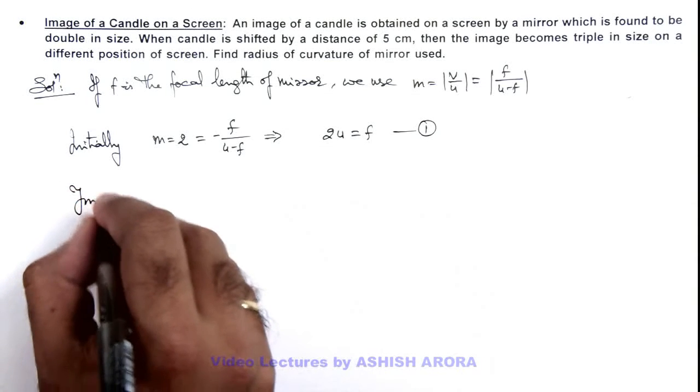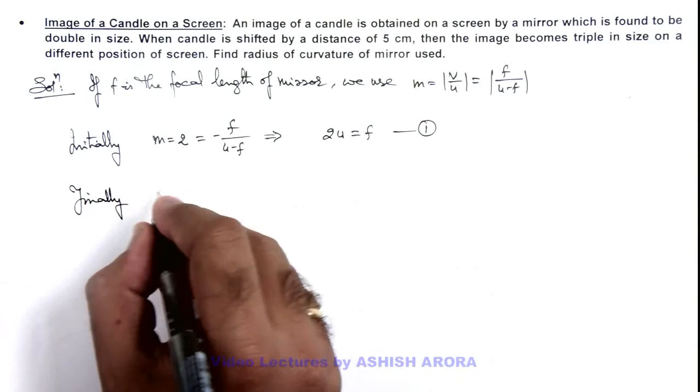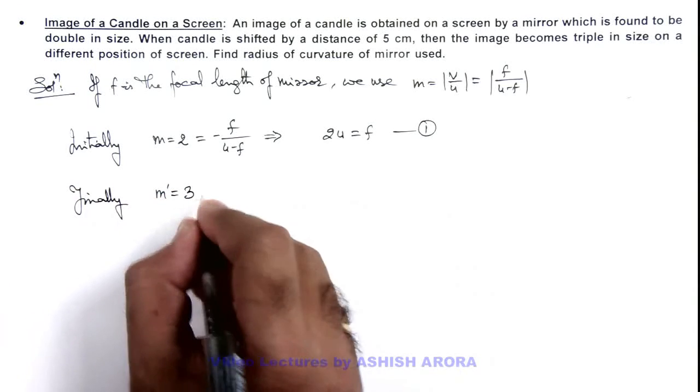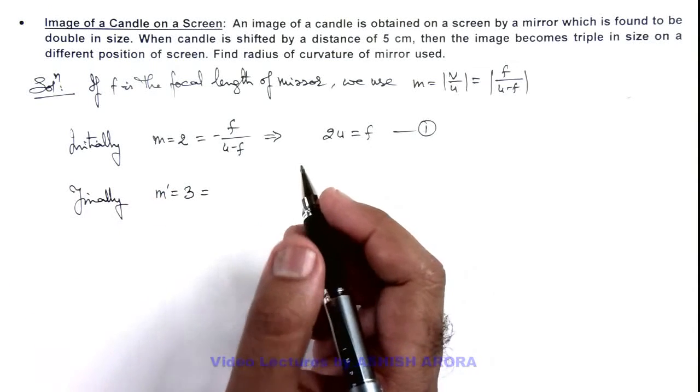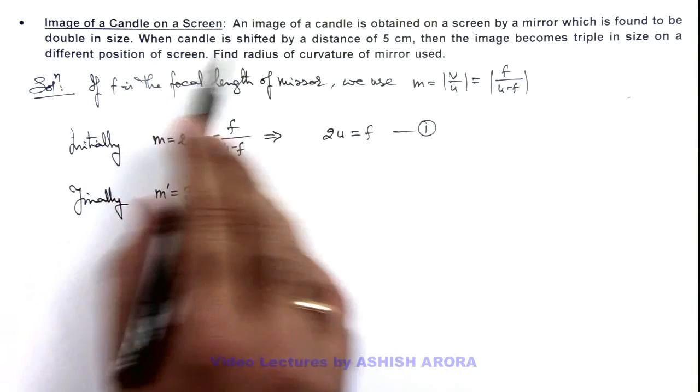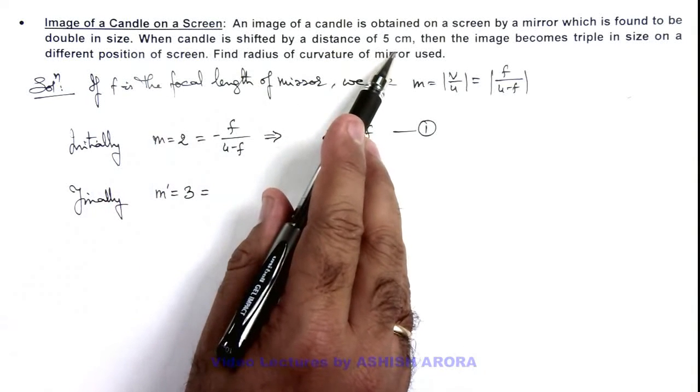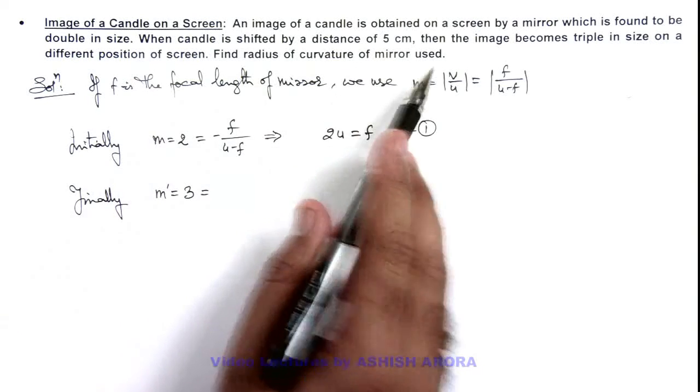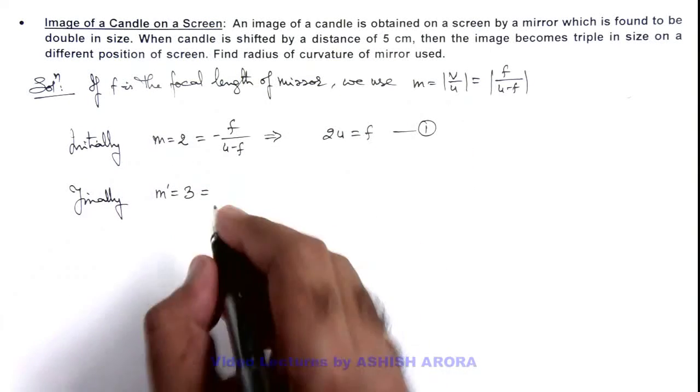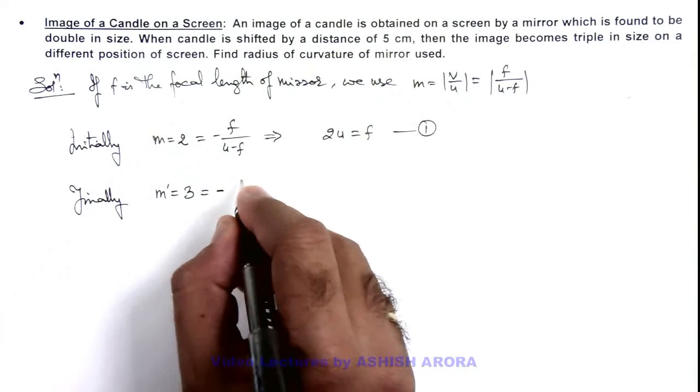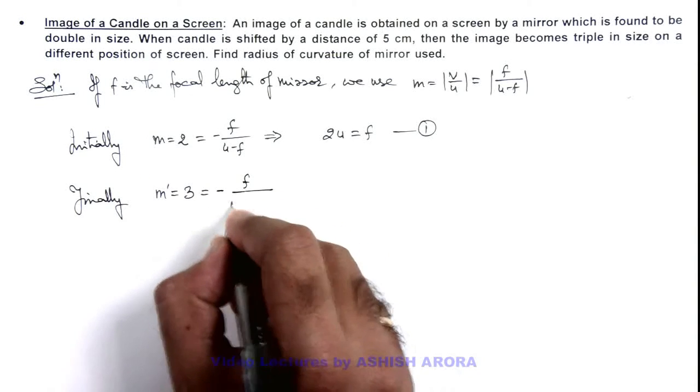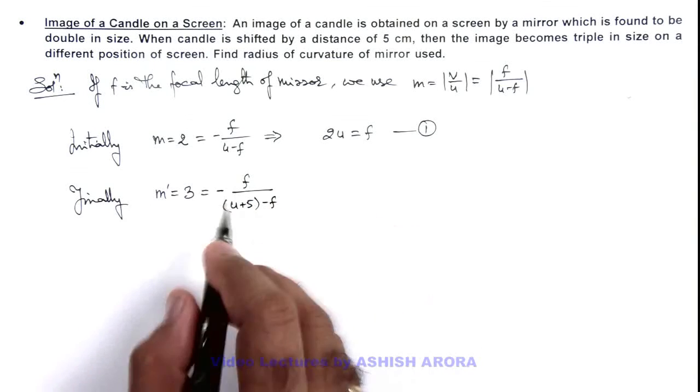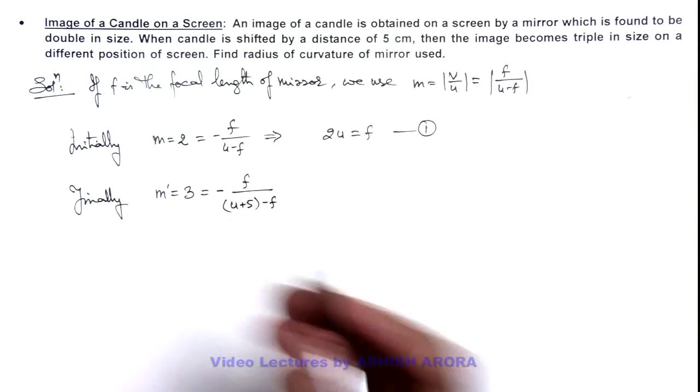In the final stage, the value of magnification m dash is increased to 3, but we are also given that for this, the candle has to be shifted by a distance of 5 centimeters. Certainly it should be shifted 5 centimeters away from the mirror because it is further enlarged. So magnification can be written as minus f by u plus 5 minus f. Again, this negative sign is because it is a magnified image.